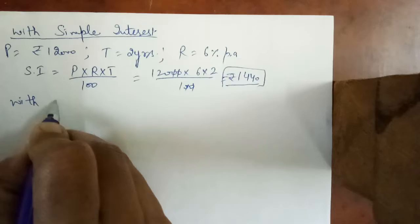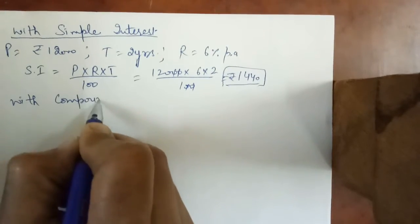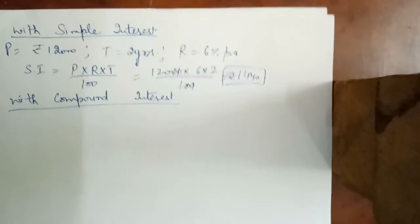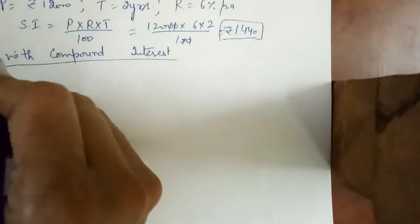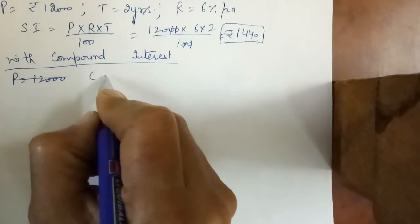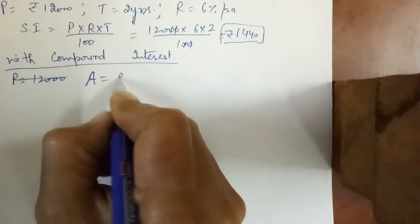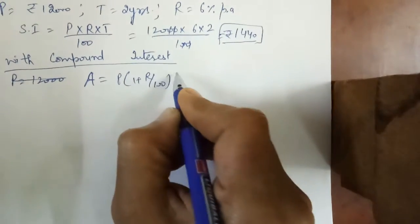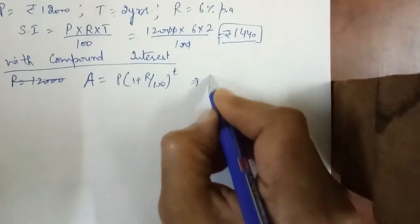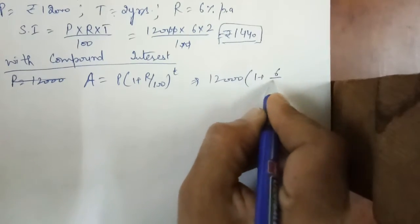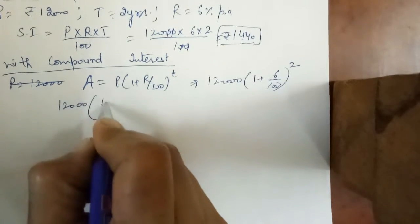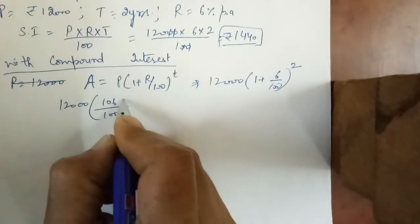Now we will find the compound interest. P is the same: ₹12,000. We will use the compound interest amount formula: A = P × (1 + R/100)^T. Putting in values: A = 12,000 × (1 + 6/100)^2, that is 12,000 × (106/100)^2.